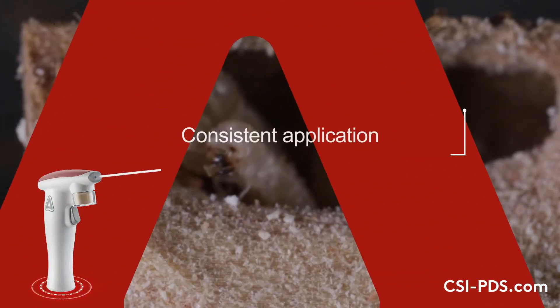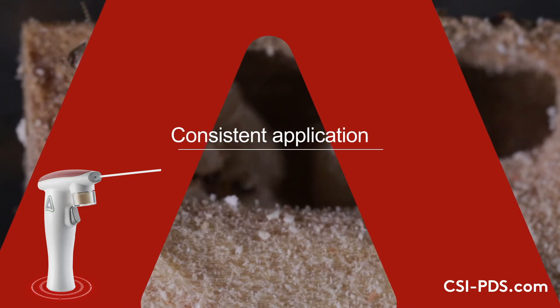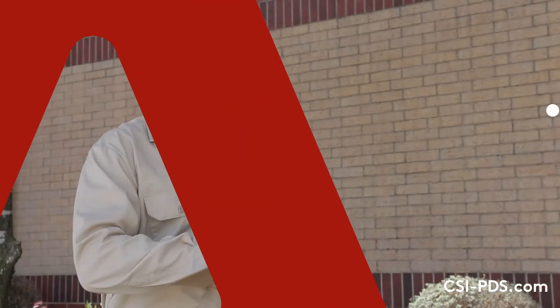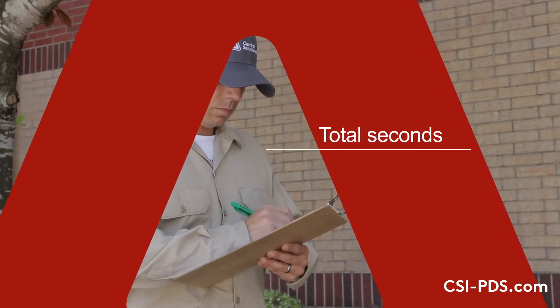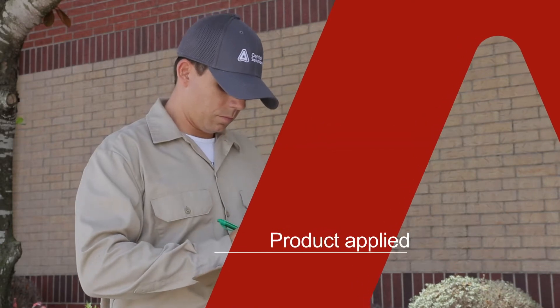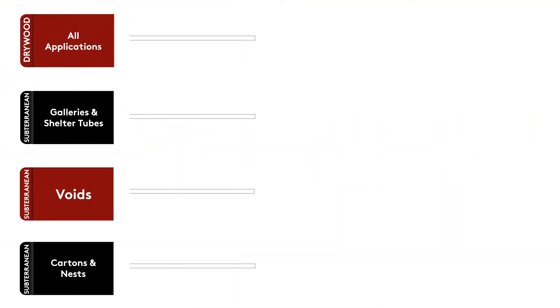The PDS applies a consistent amount of termiticide depending on how long you actuate the trigger on the unit. When recording termiticide usage, you'll need to track the total number of seconds you hold the trigger down. This will then tell you how much product you applied. Let's take a look at the application rate tables from the label.